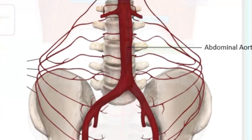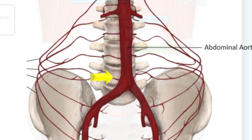The posterior relations are formed by the T12 to L4 vertebrae — noting that at L4 this artery divides into two — along with a number of lumbar veins that cross it posteriorly as they pass to the inferior vena cava.